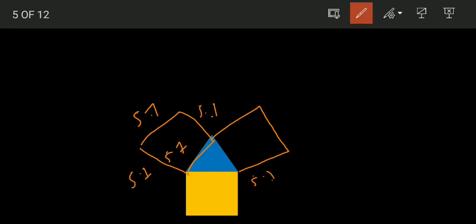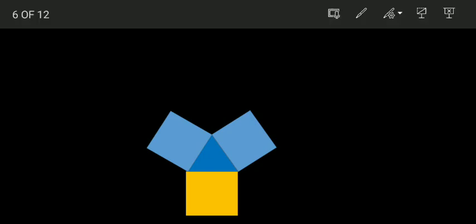Now we have a square like this. Now again what to do? Again repeat the procedure. We have to draw an isosceles triangle over here.